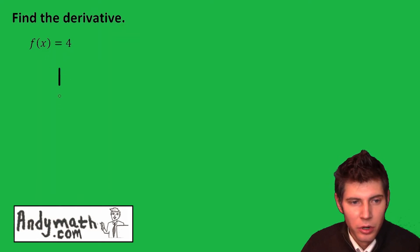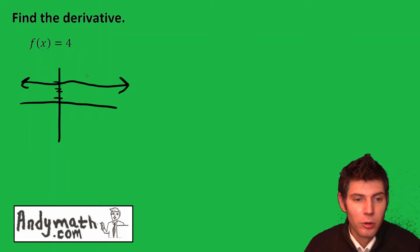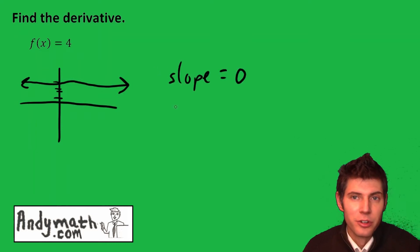f of x equals 4 is a horizontal line at y equals 4. We know the derivative is the slope, and the slope of this line everywhere is 0. Therefore, the derivative f prime of x equals 0.